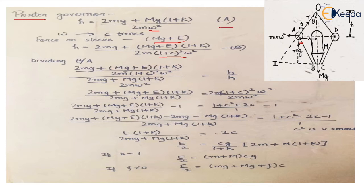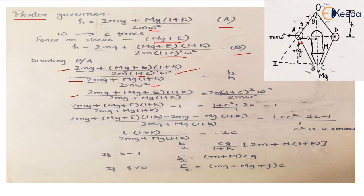We name the two height equations A and B, and divide them. Since the height h is equal on both sides, it cancels out. After dividing, we get: (2mg + (Mg + E)·(1 + k)) / (2mg + Mg·(1 + k)) = (1 + c)²·ω² / ω². Subtracting 1 from both LHS and RHS, and taking the LCM, we see that common factors on the left-hand side cancel out. On the RHS, the 1 cancels and since c is very small, c² is negligible and can be ignored.